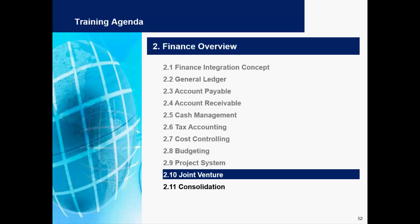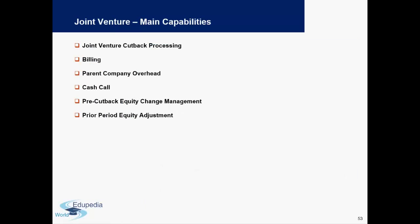Joint Venture is an independent sub-module which some companies choose not to implement. Joint Venture is actually a traditional concept mainly used for companies which have different joint venture agreements, or where a parent company and a child company have a joint venture agreement.